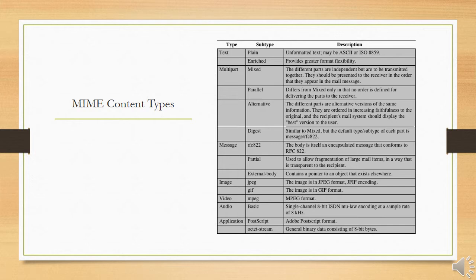Each boundary starts on a new line and consists of two hyphens followed by the boundary value. The final boundary, which indicates the end of the last part, also has a suffix of two hyphens. Within each part there may be an optional ordinary MIME header.